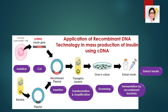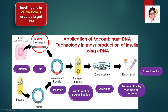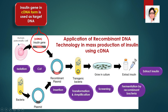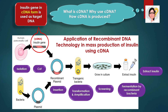Let's discuss how cDNA is involved in this process. The insulin gene, or the target gene, is in cDNA form and is used as target DNA. Instead of isolating the target gene directly from the human pancreatic cell, another process is used which involves the formation of cDNA. So, what is cDNA? Why do we use cDNA, and how is the cDNA produced?